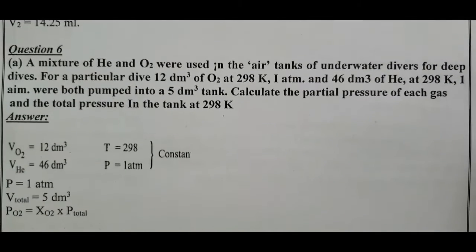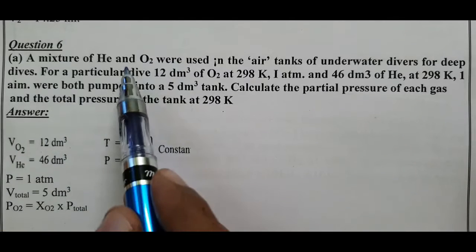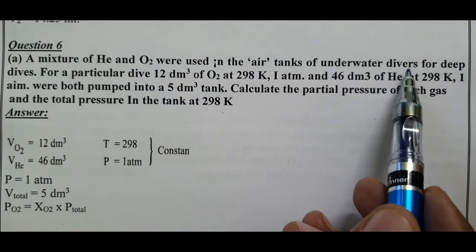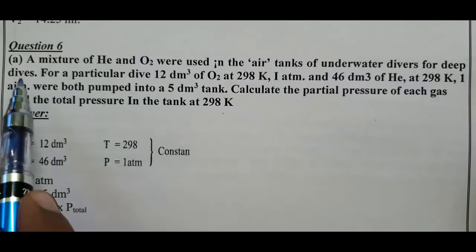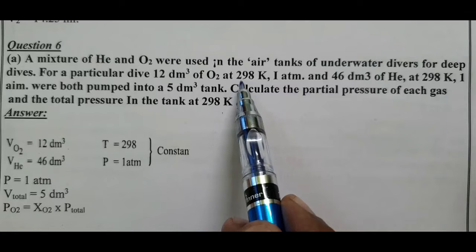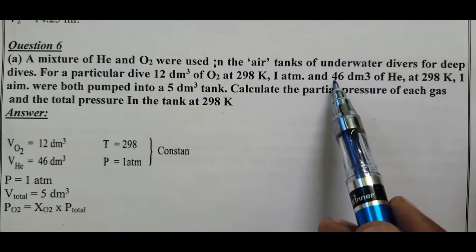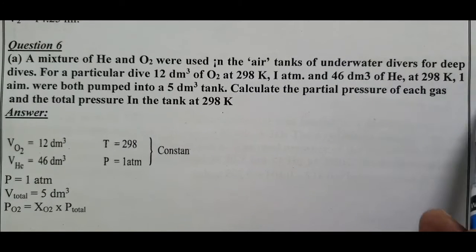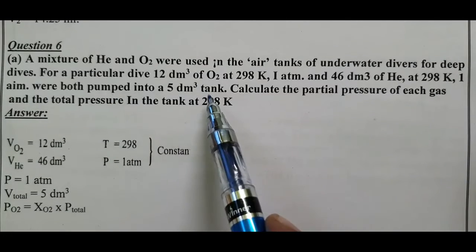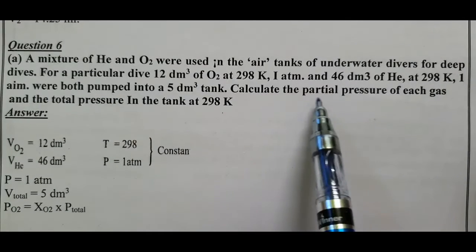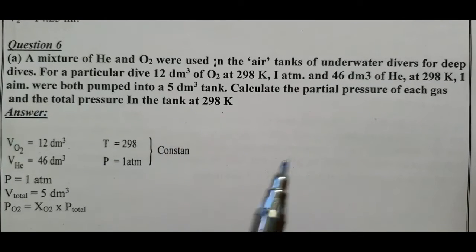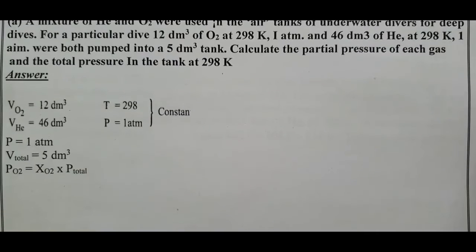Question number 6: A mixture of helium and oxygen was used in the air tanks of underwater divers for deep dives. For a particular dive, 12 dm³ of oxygen at 298 K and 1 atm, and 46 dm³ of helium at 298 K and 1 atm, were both pumped into a 5 dm³ tank. Calculate the partial pressure of each gas and the total pressure in the tank at 298 K using mole fraction.